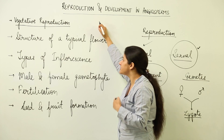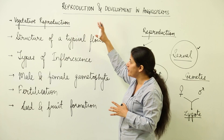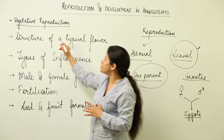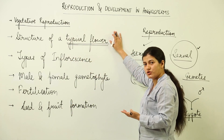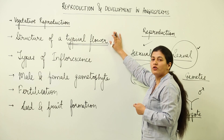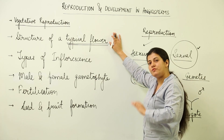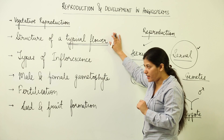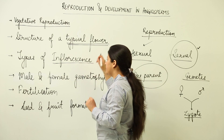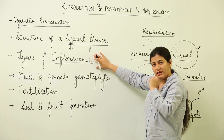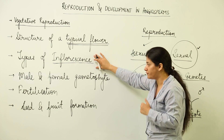Our next topic will be the structure of a typical flower. We will see what the different whorls are — it is again a morphological aspect. The arrangement of flowers on the floral axis of the plant is termed inflorescence, and we are going to study that as well. Inflorescence is a term that enables us to understand how the flowers are arranged on the plant itself.